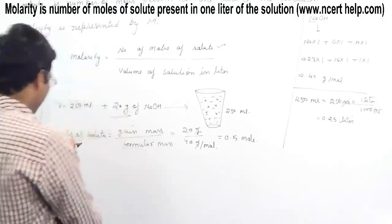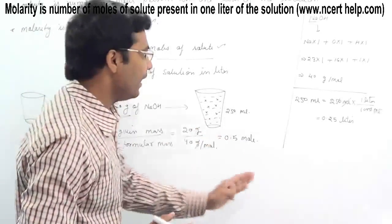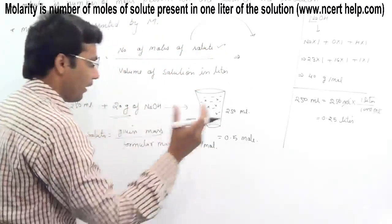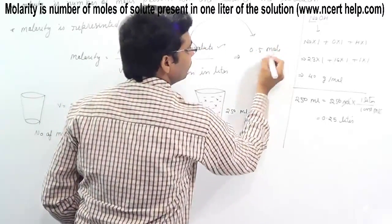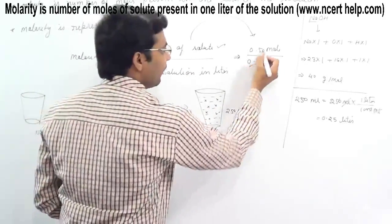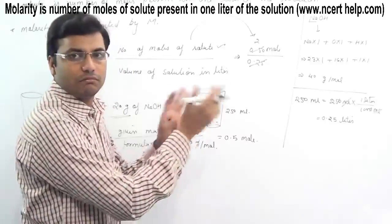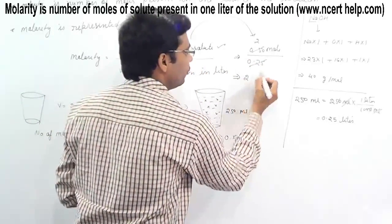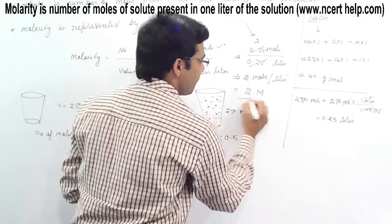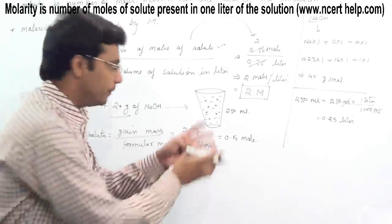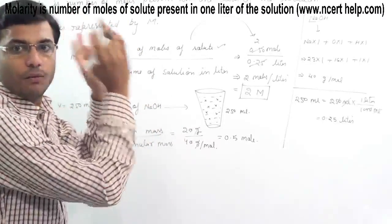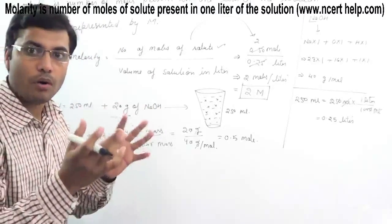Now we can plug both values into the molarity equation. Number of moles of solute is 0.5 moles, and volume of solution is 0.25 liters. So molarity equals 0.5 divided by 0.25, which gives 2 moles per liter, or 2 M. This is the molarity of this solution. In this problem you learned the definition and formula of molarity, and how to calculate it.